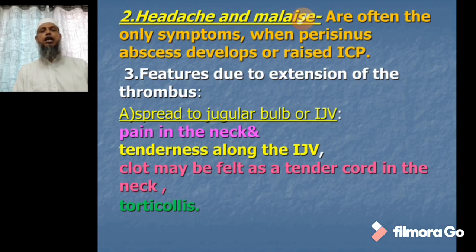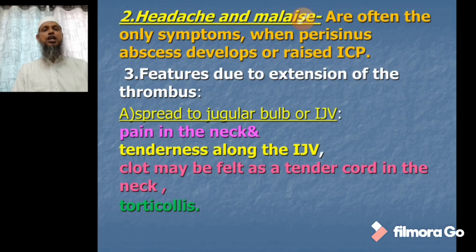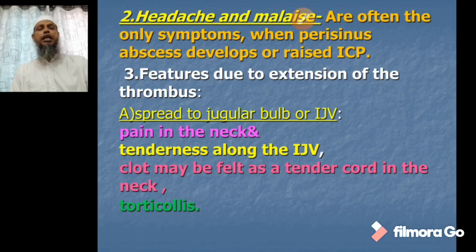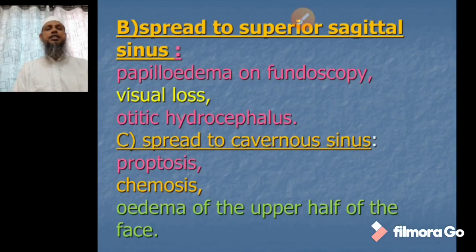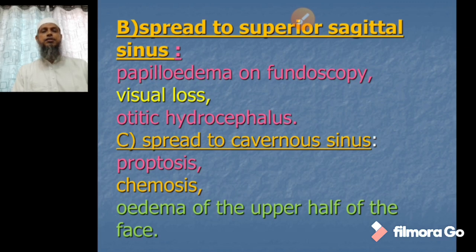Number three: features due to extension of the thrombus. If the thrombus spreads to the jugular bulb or internal jugular vein, there is pain in the neck and tenderness along the internal jugular vein; the clot may be felt as a tender cord in the neck, and there is torticollis. If the thrombus spreads to the superior sagittal sinus, there will be papilledema seen on fundoscopy, visual loss, and otitic hydrocephalus. If it spreads to the cavernous sinus, there will be proptosis, chemosis, and edema of the upper half of the face.